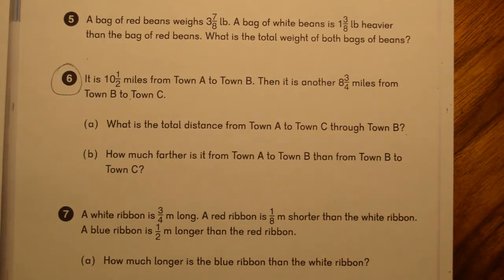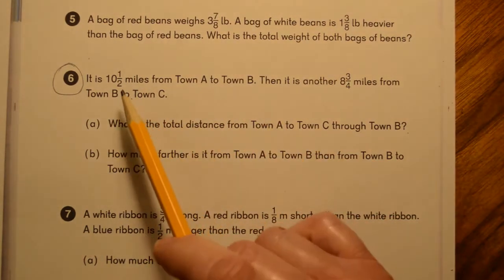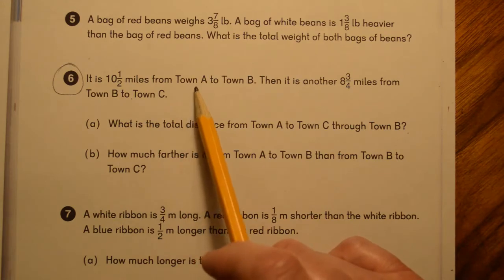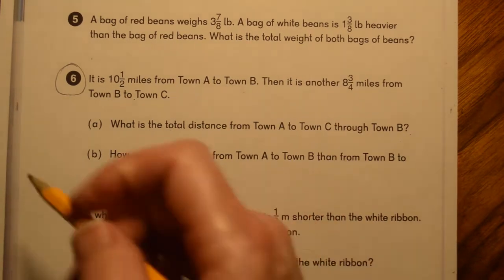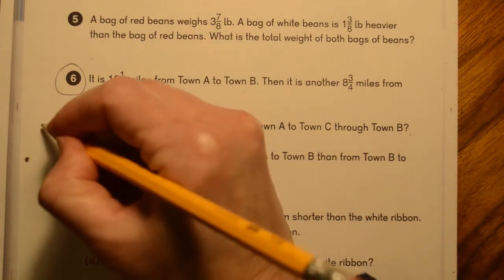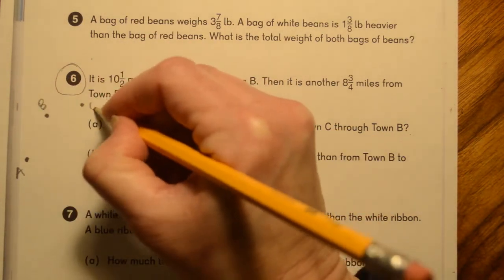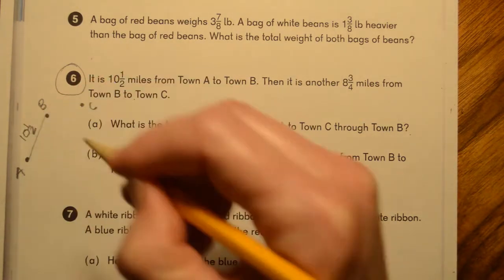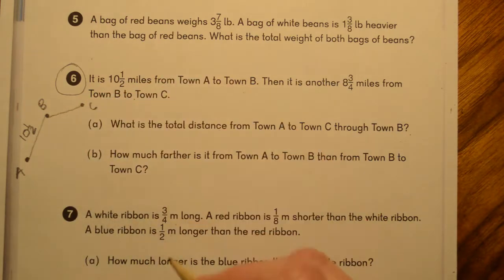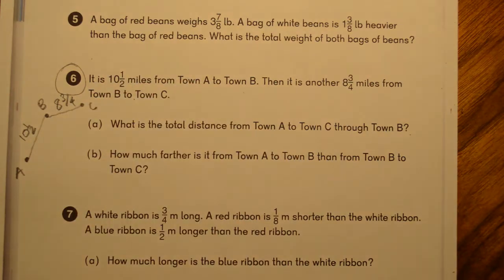So it's talking about the distances between three towns. We've got town A, town B, and town C. And we know that the distance from town A to town B is ten and a half miles. And then to get from B to C, it's another eight and three fourths miles. It doesn't tell us that they're on the same line. It might be something like this. A, B, and C. And it tells us that this distance is ten and a half miles. And then this one is eight and three quarter miles.